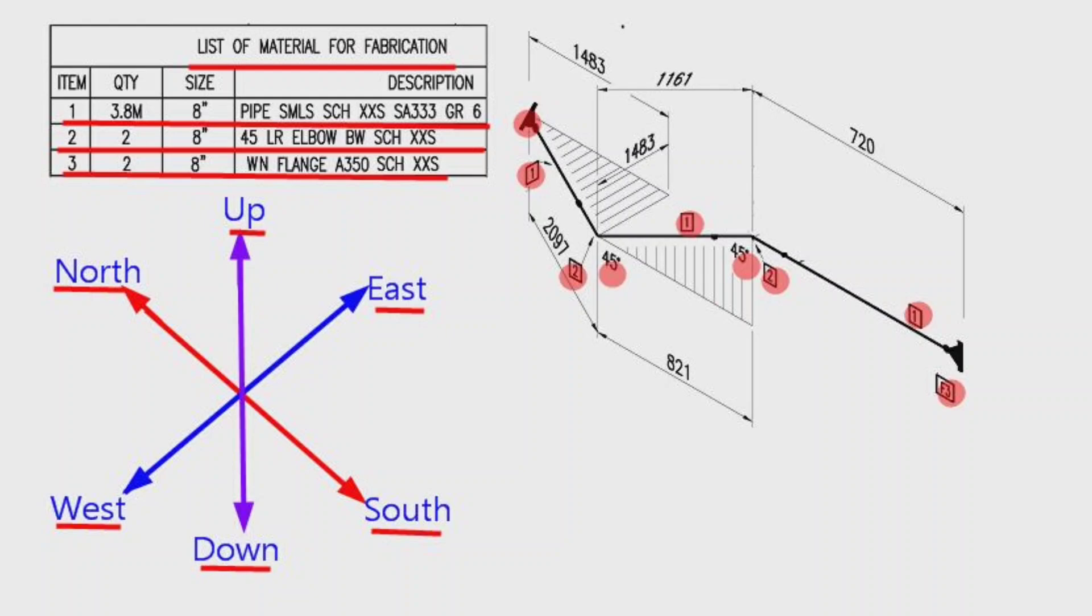The man who reads the isometric must think that he is in the middle of these directions, his face is towards the north. Let's try to read this pipe isometric using these directions.